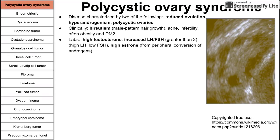Labs show high testosterone and an increased ratio of LH to FSH, usually greater than 2, meaning high LH and low FSH. You also have high estrone from peripheral conversion of excess testosterone. A helpful way to remember this: very high LH causes the thecal cells to make high androgens, so you have high testosterone. Those androgens are peripherally converted to estrogens, giving high estrone, and those estrogens and testosterone then feedback-inhibit the brain to produce less FSH, so you end up with low FSH.